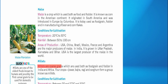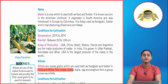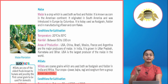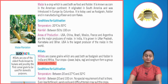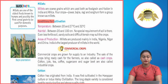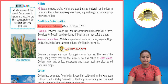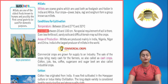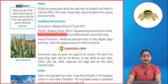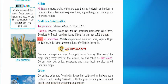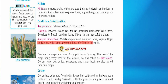Millets are coarse grains used both as food grain and fodder in India and Africa. Four crops — jowar, bajra, ragi and sorghum — form a group known as millets. Conditions for cultivation — Temperature: between 20 and 32 degrees Celsius. Rainfall: 20 to 100 cm. No special soil requirement; even less fertile sandy soils and difficult terrain may suit the crop. Areas of production: Millets are produced mainly in India, Nigeria, Niger and China. India is the largest producer of millets in the world.